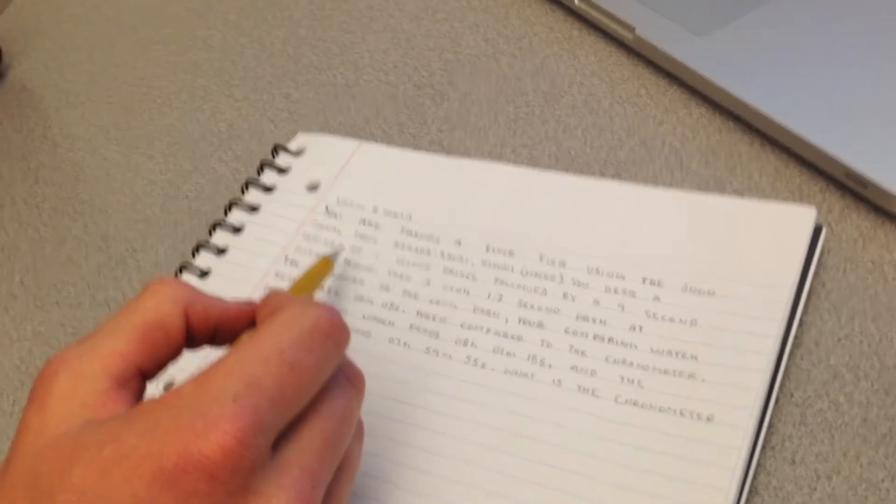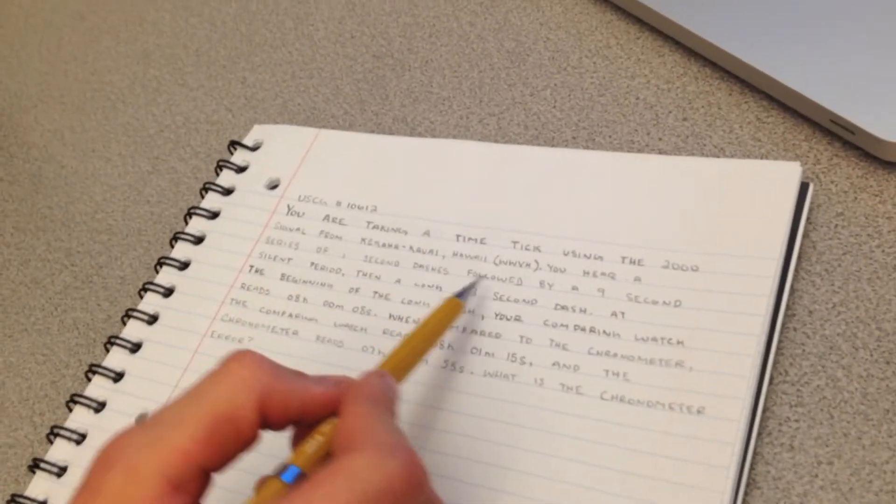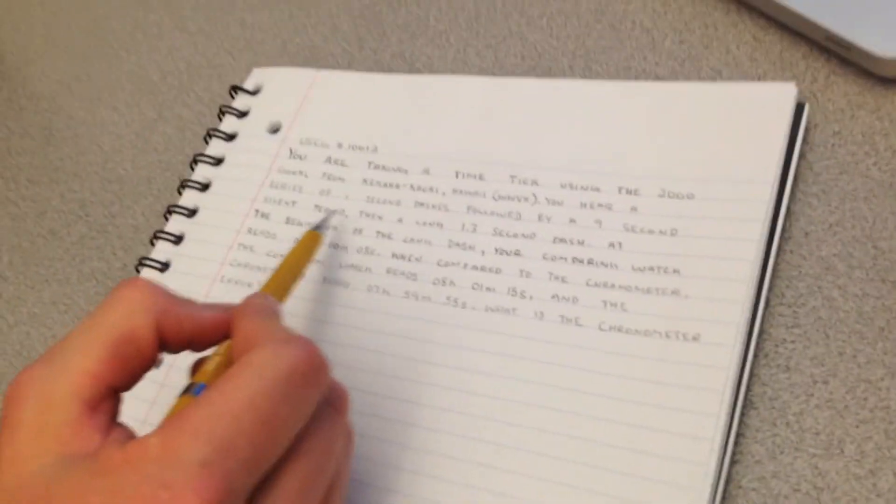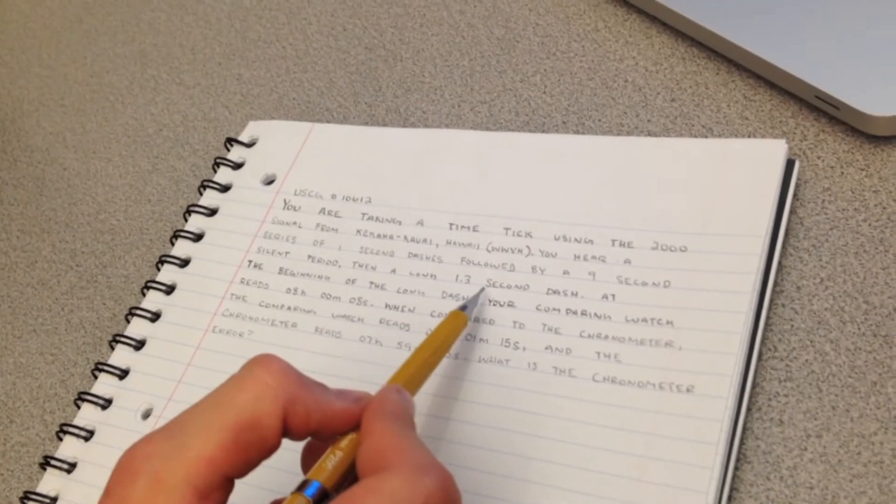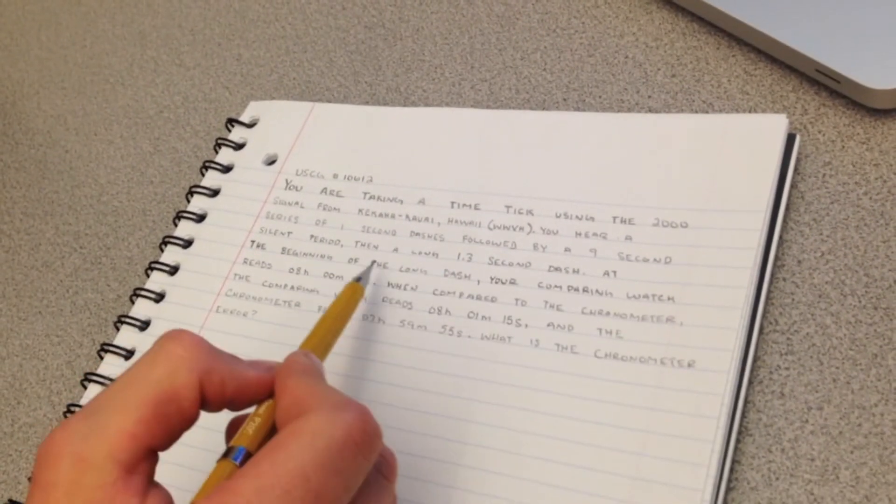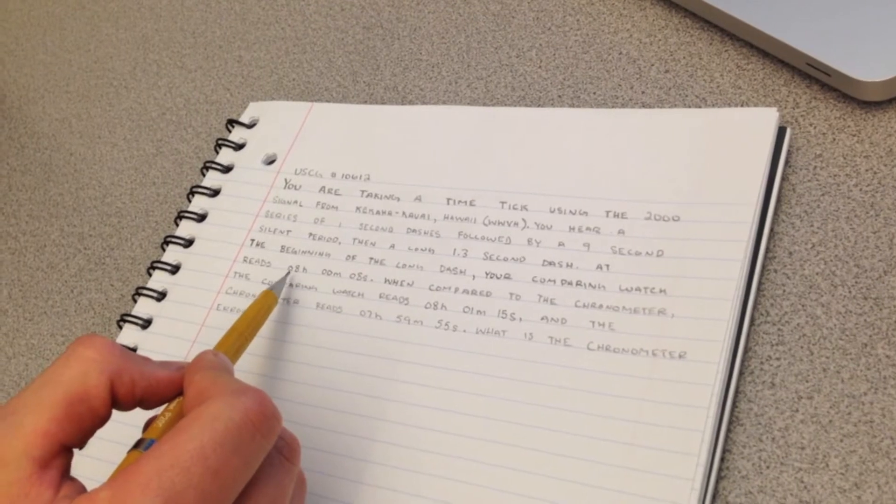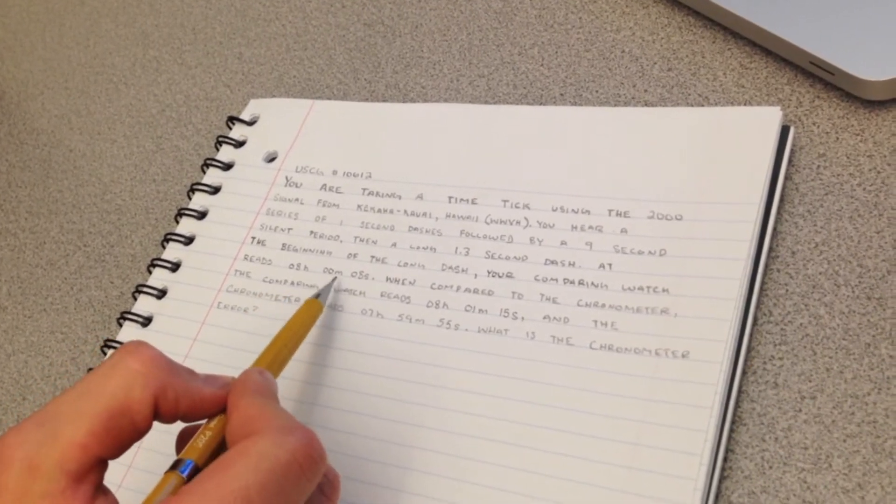You hear a series of one-second dashes followed by a 9-second silent period, then a long 1.3-second dash. At the beginning of the long dash, your comparing watch reads 08 hours, 00 minutes, 08 seconds.